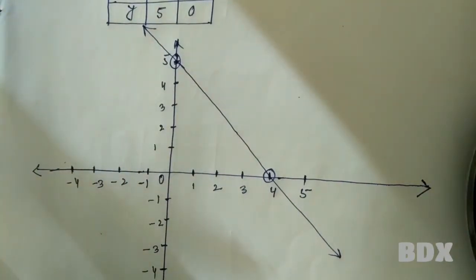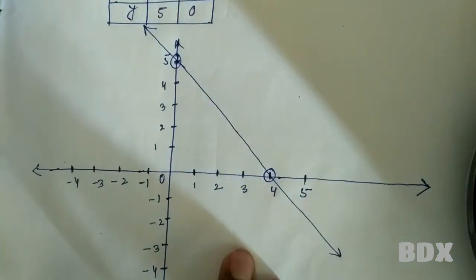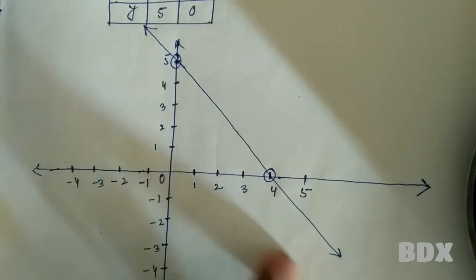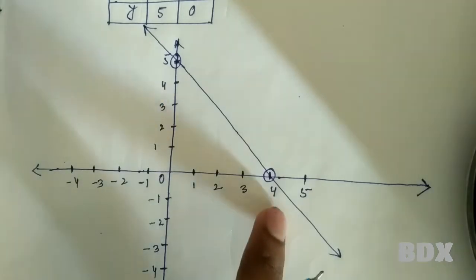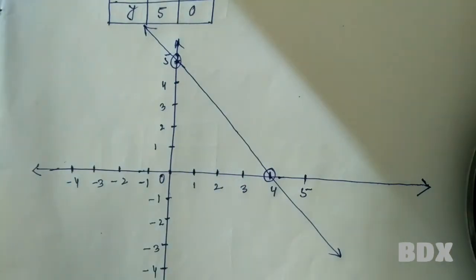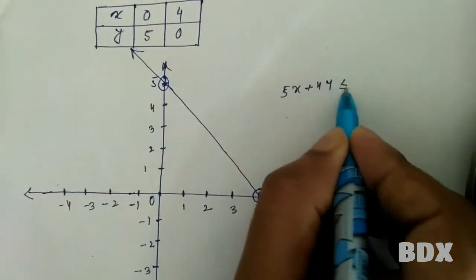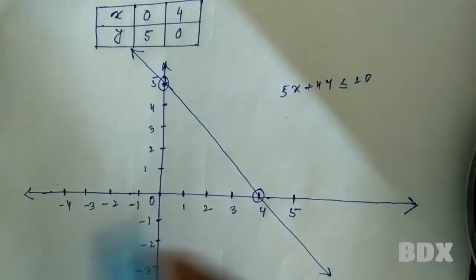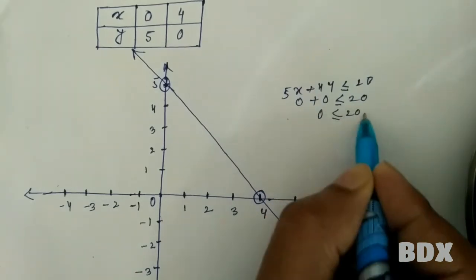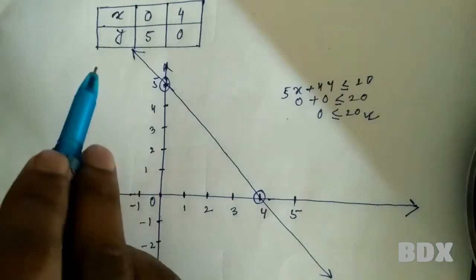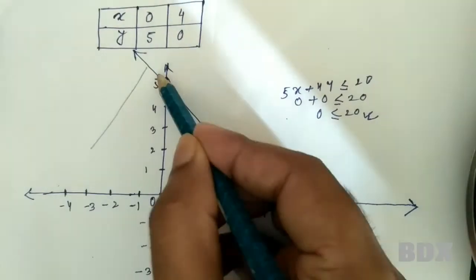Now we find the solution region. This line divides the Cartesian coordinate into two parts: the upper half and the lower half of the plane. To determine which half satisfies the inequality, we substitute the origin (0, 0) into 5x plus 4y less than or equal to 20. This gives 0 less than or equal to 20, which is true. Therefore the solution region for this inequality is the lower half of the plane.